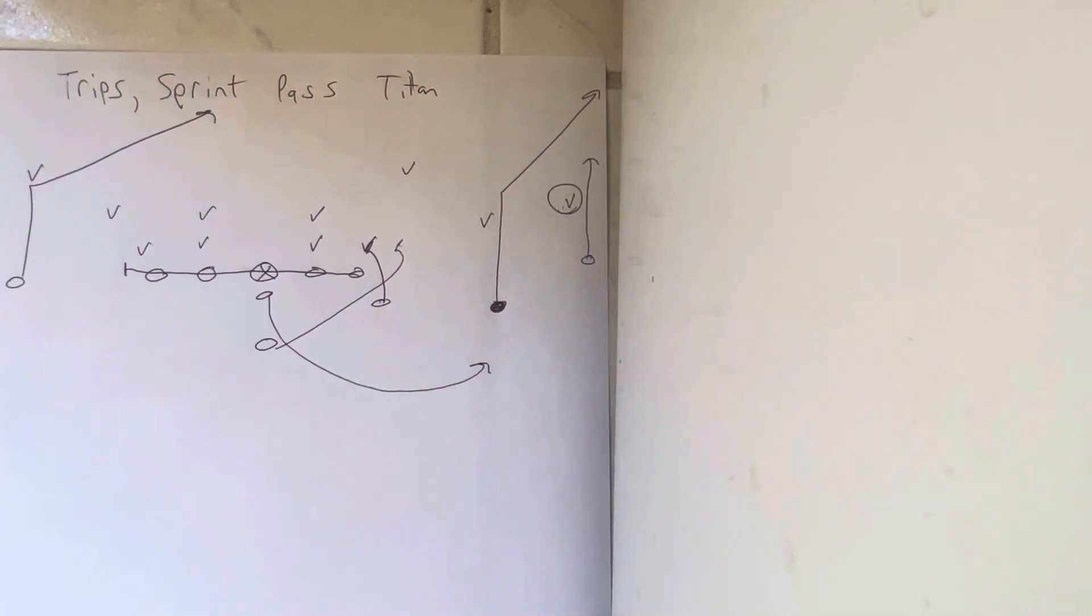The play side A-back's going to get a little wider off the tackle because he's going to have to block down on number one. The line is going to slide away from the call or gap away from the Sprint Pass, so if it's Sprint Right, the line slides left. He blocks down to number one.